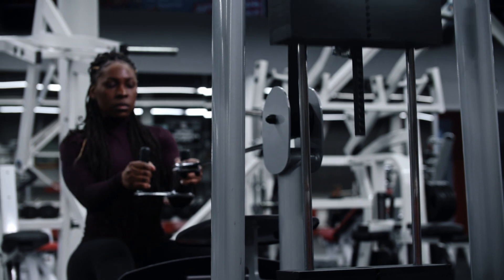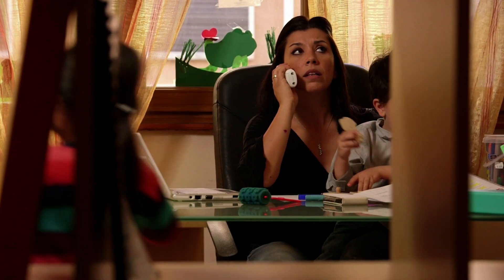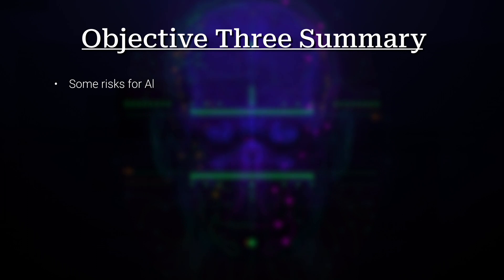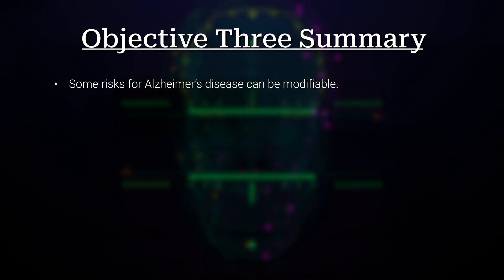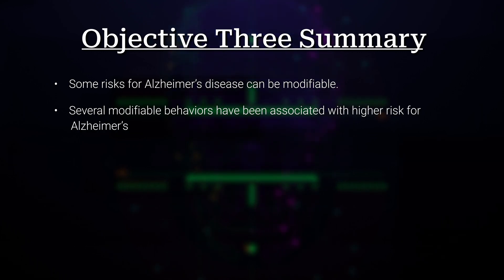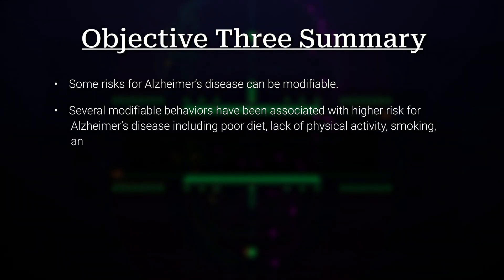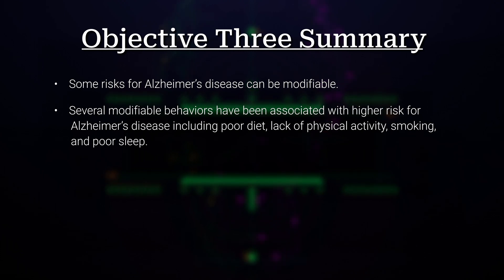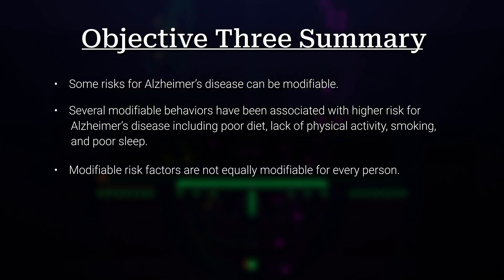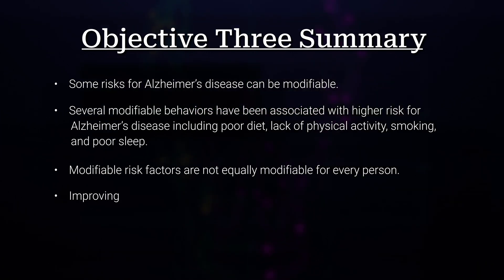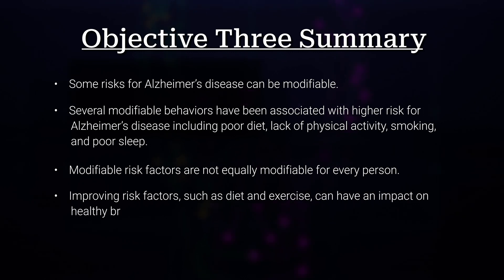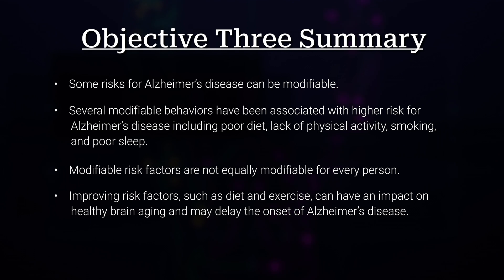Exercise is another example: if you have a regular job and free evenings, maintaining an exercise routine is manageable, but working two jobs while caring for kids makes finding that time much harder. Several modifiable behaviors have been associated with higher risk for Alzheimer's disease, including poor diet, lack of physical activity, smoking, and poor sleep. Improving risk factors such as diet and exercise can have an impact on healthy brain aging and may delay the onset of Alzheimer's disease.